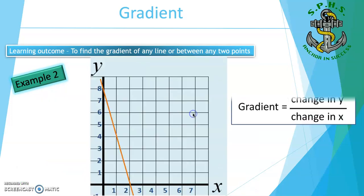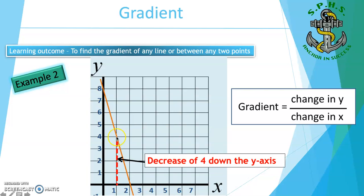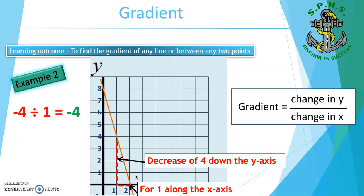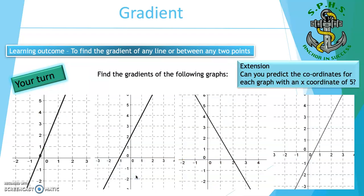Example 2. Again, I can choose any two points on the line. I'm choosing this point and this point. To get from this point to this point, I have to go down 4 units and then over 1 unit. The gradient of this line is negative 4. Because I went down, I did not rise. So I use negative 4 over 1. Negative 4 over 1 equals negative 4. On your own, find the gradient of the following graphs.